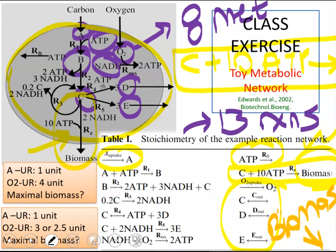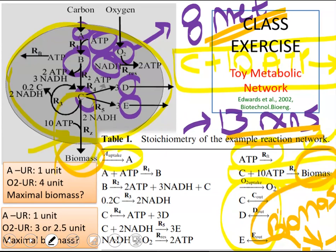So if your stoichiometric matrix is 8 by 13, then biomass should not be among your metabolites. Or if biomass is among your metabolites, you should also add the biomass secretion reaction to your system, ending up with 9 metabolites, because you also consider biomass as a metabolite, and 14 reactions with the secretion of biomass.